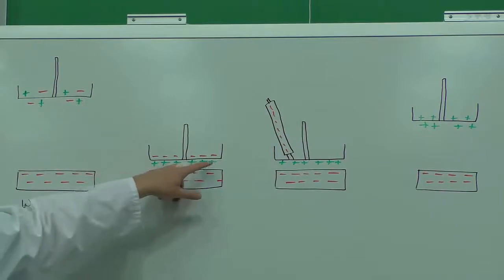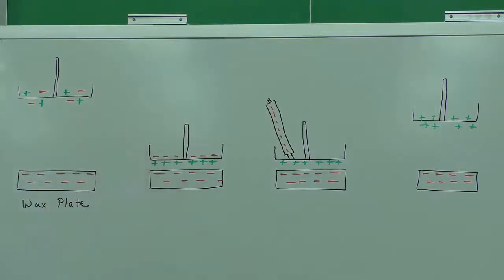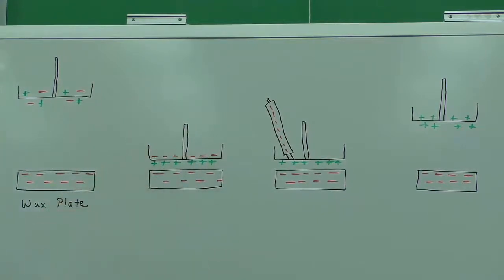You start to see the positive charges line up on the bottom of the aluminum plate and then negative charges on the top of the aluminum plate. This is because the negative charges in the base are repelling the negative charges in the aluminum plate, but they are attracting the positive charges in the plate. This is what we call polarization.